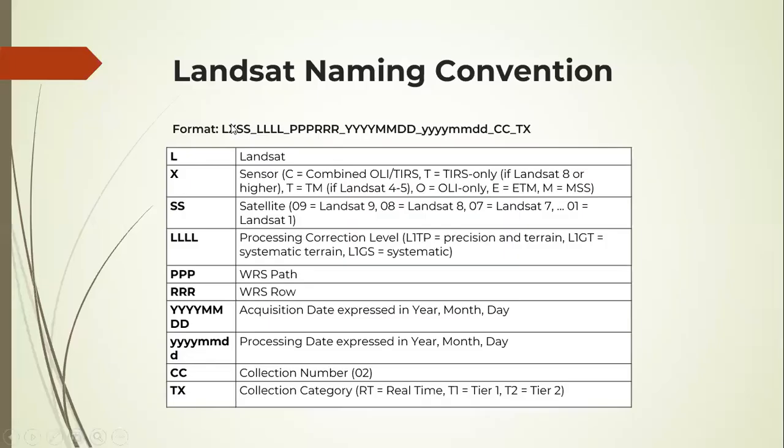The first L there would stand for Landsat. Usually, it is followed by the sensor, so it's either LC, LT, LO or LE, depending on the sensor. For Landsat 8, it only has two sensors, that is the TIRS sensor and the OLI. If you downloaded based on the tutorial, you'll notice that the naming has LC, meaning that you get both sensors.